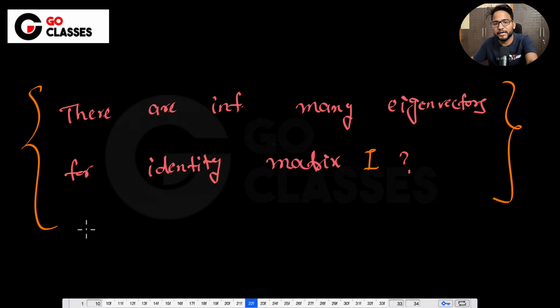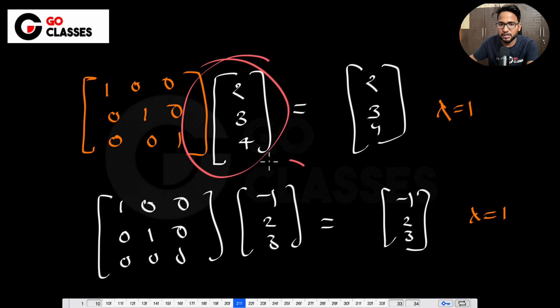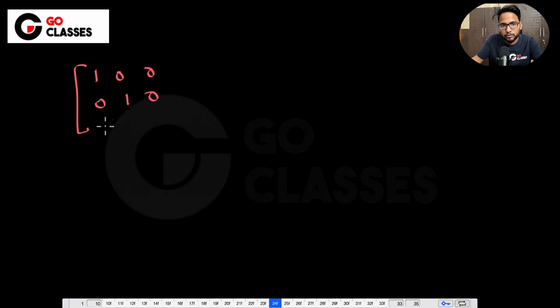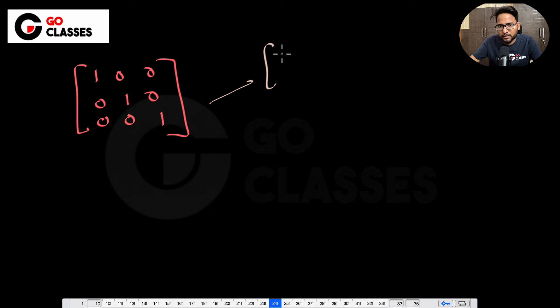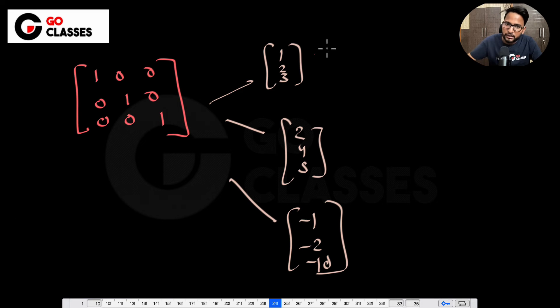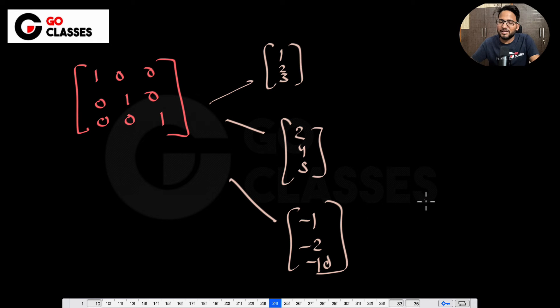Let's suppose this is a 3×3 identity matrix. Any vector you take is an eigenvector here. So for this identity matrix, you take any vector — say (1,2,3), or (2,4,5), or (-1,-2,-10) — there are infinitely many vectors which are eigenvectors. But how many of them are linearly independent? You can answer that very easily.